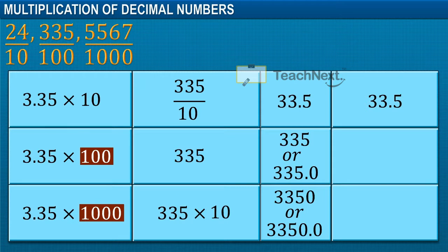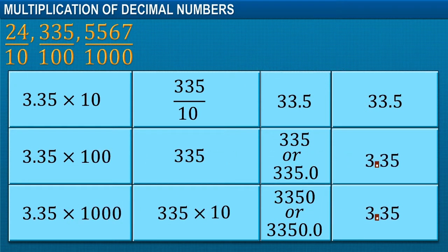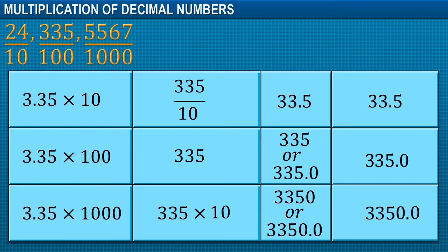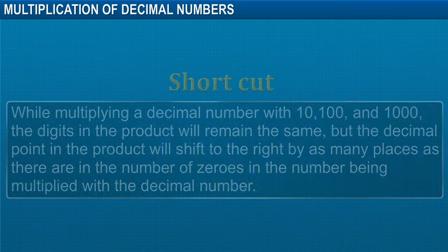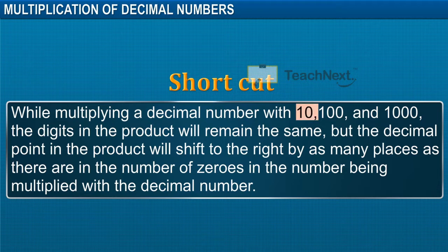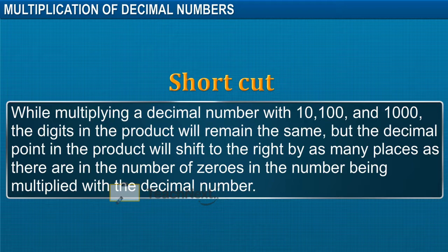So we get 33.5, 335, and 3350 as answers. Notice that when multiplied by 10, the decimal point has shifted by one place to the right. When multiplied with 100 and 1000, the decimal point has shifted two places and three places to the right respectively.